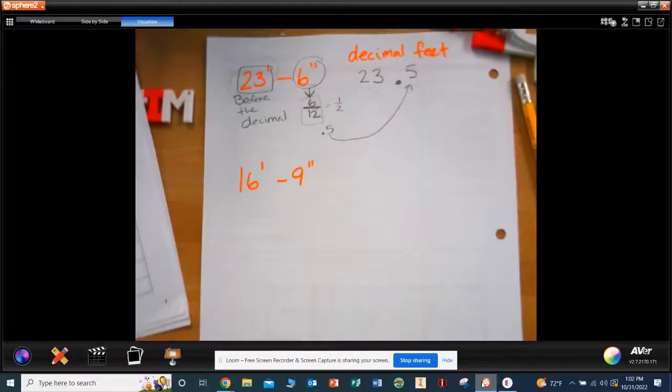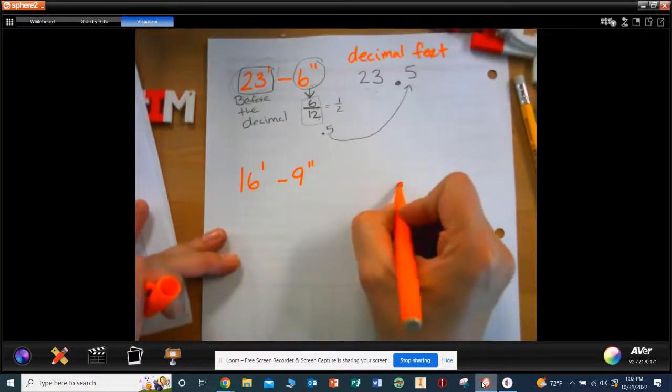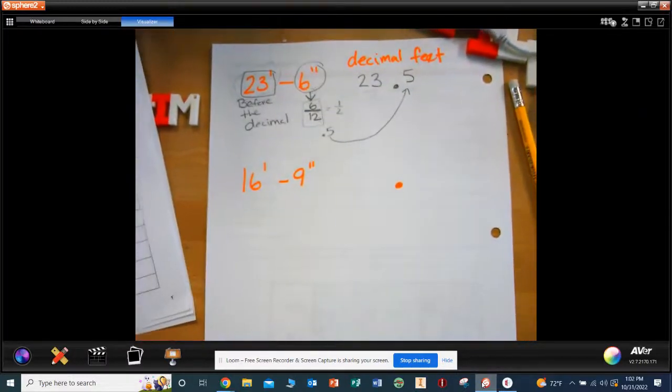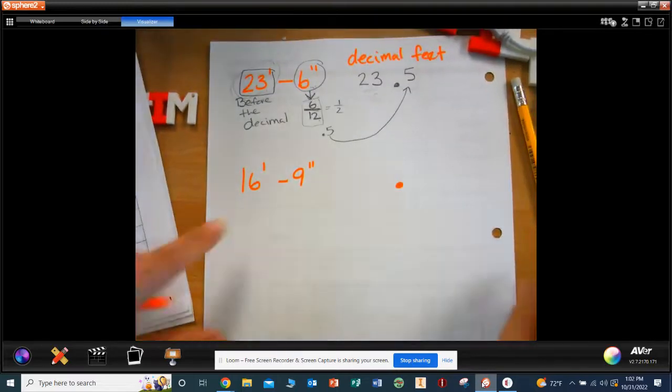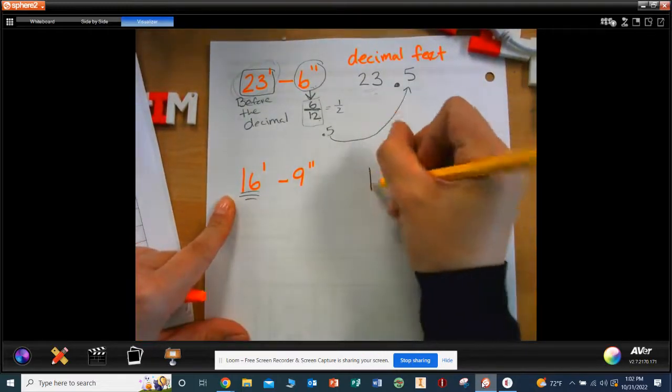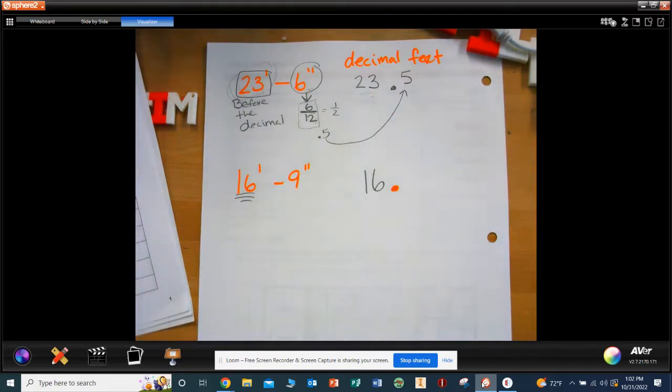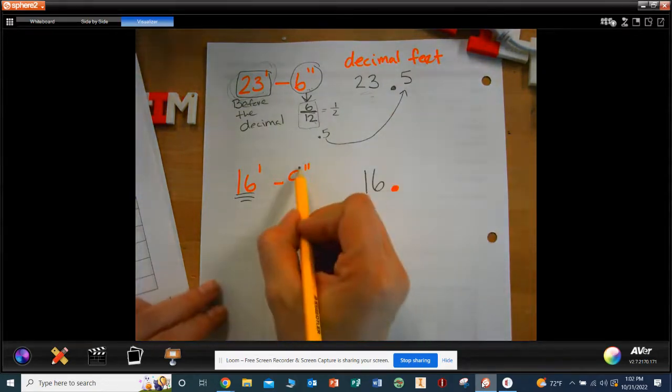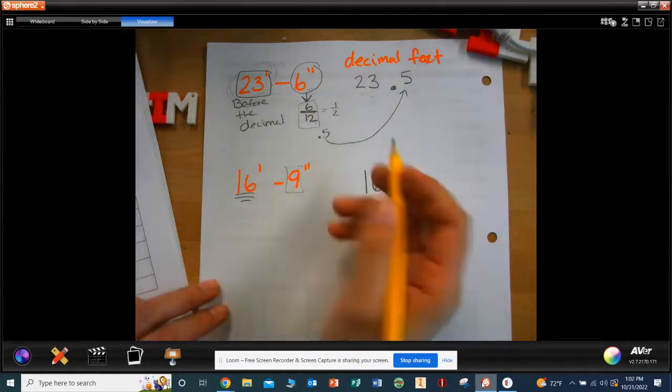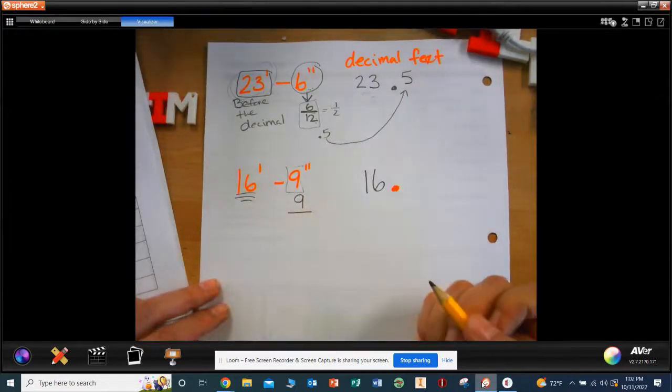All right, I'm going to put a decimal. What number goes in front of the decimal? Yeah, so whatever this is just goes in front, no big deal. What do I do with the 9? 9 over what? 12.